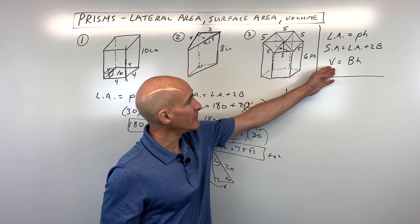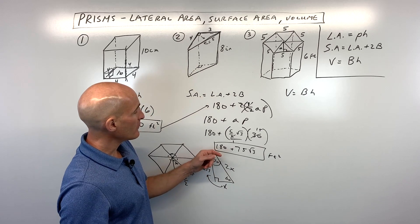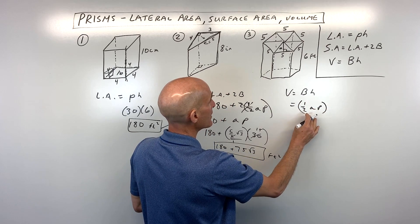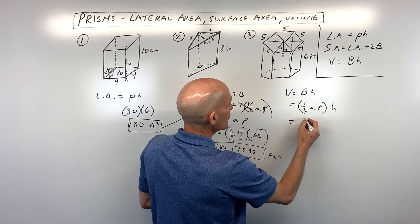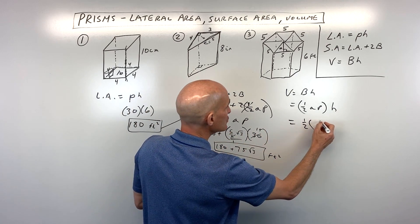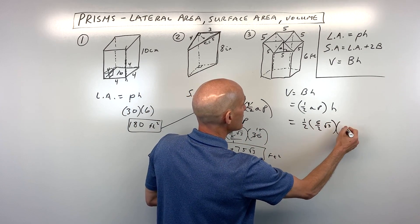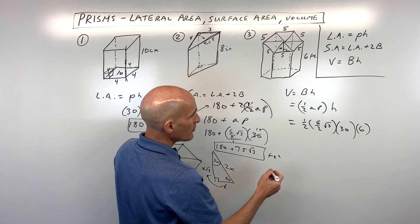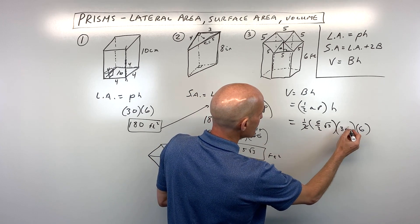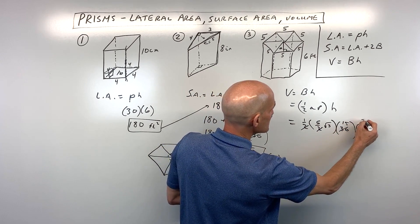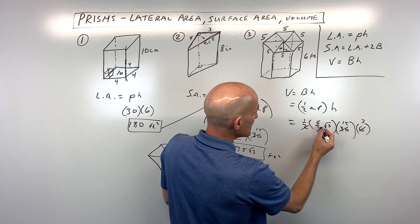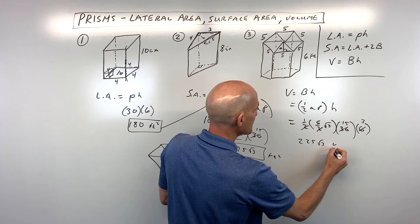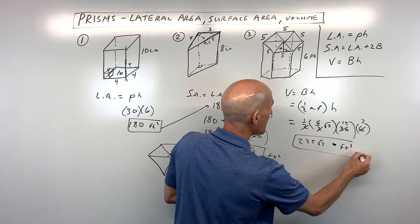For volume, it's the area of the base times the height. The area of the base for a regular polygon is one-half apothem times perimeter. The apothem is 5/2 times root 3, the perimeter is 30, and the height is 6. Simplifying: 2 goes into 30 fifteen times and into 6 three times, giving 15 times 5 times 3 times root 3, which equals 225 root 3 feet cubed. That's the exact answer.